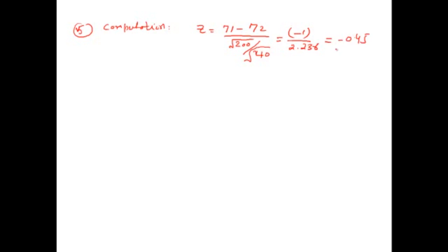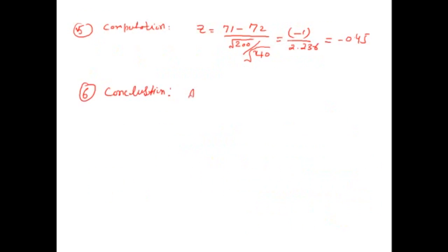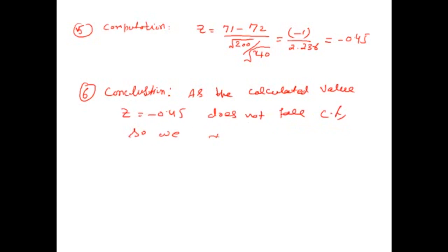The critical region was minus 2.58 and plus 2.58, and the calculated value of z is minus 0.45, which falls in the acceptance region. As the calculated value z equals minus 0.45 does not fall in the critical region, so we will not reject H-naught.